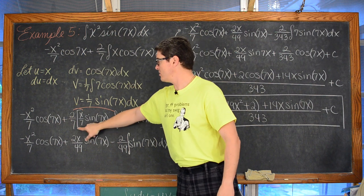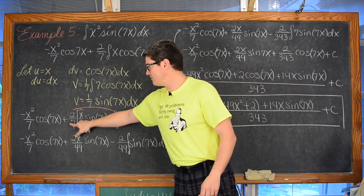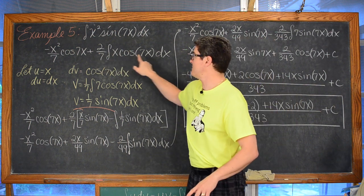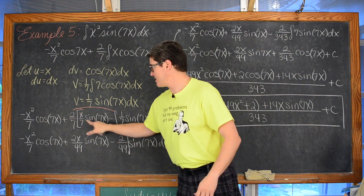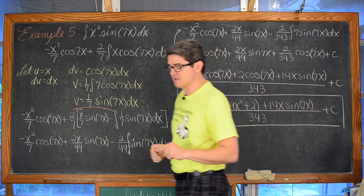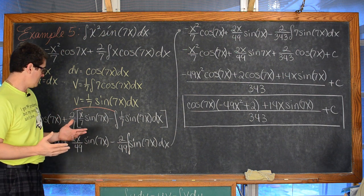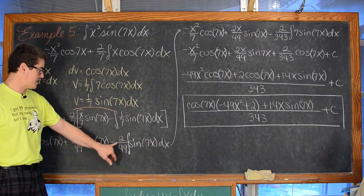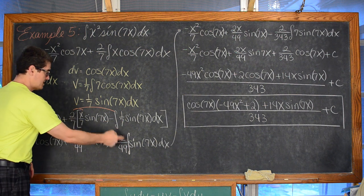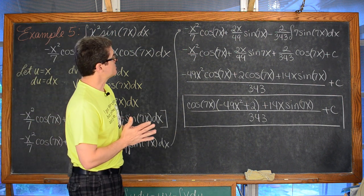It is a positive two-sevenths, so you need to distribute it through both terms — not just one. You know, it was two-sevenths times one term; now applying integration by parts it becomes two-sevenths times two terms. Make sure you use parentheses every time you do substitution. When I distributed through, 2 times negative one-seventh gives negative two-sevenths, and pulling that one-seventh out front gives a denominator of 49, since 7 times 7 equals 49.